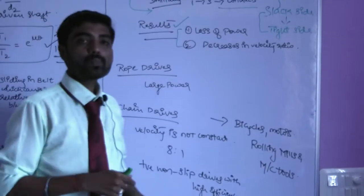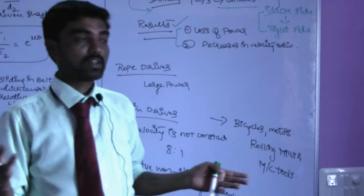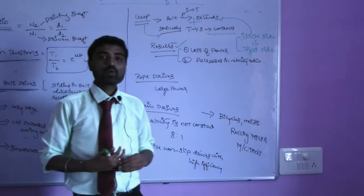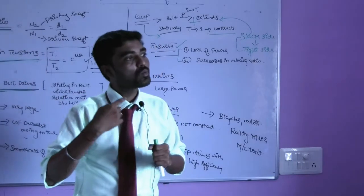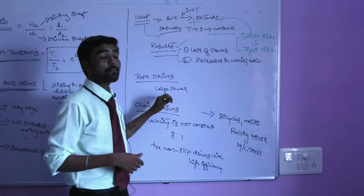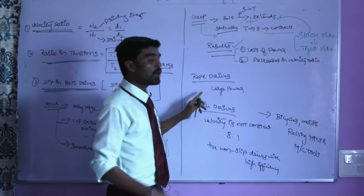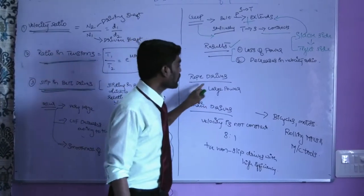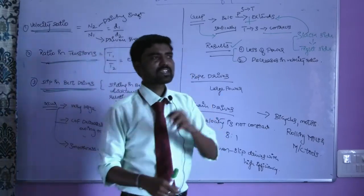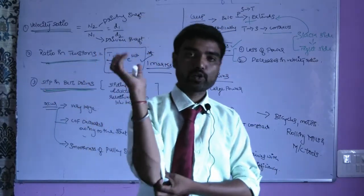Rope drives are used for transmission of larger power. Next is belt drives, where the velocity ratio is constant.